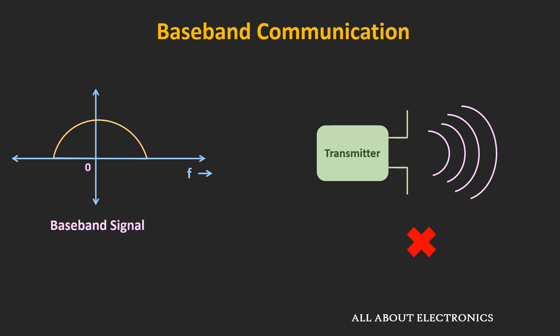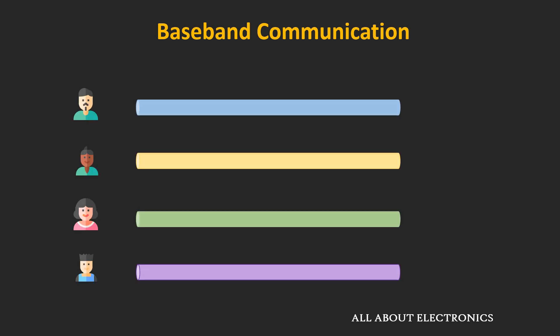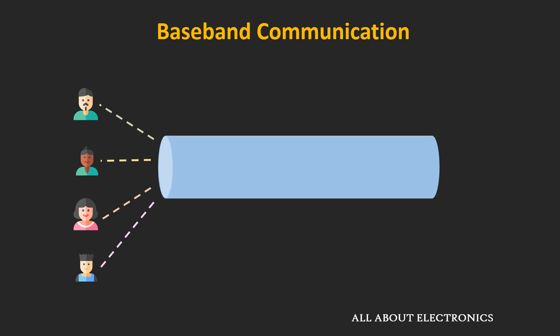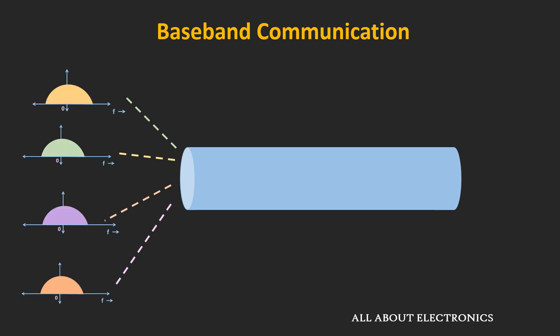At low frequencies, the height of the antenna would be very high. So in baseband communication, each user is allocated a different channel, such as a coaxial cable or twisted pair cable. Because if such signals are transmitted simultaneously, there will be interference between each signal, since the audio spectrum of each user contains a similar range of frequencies.